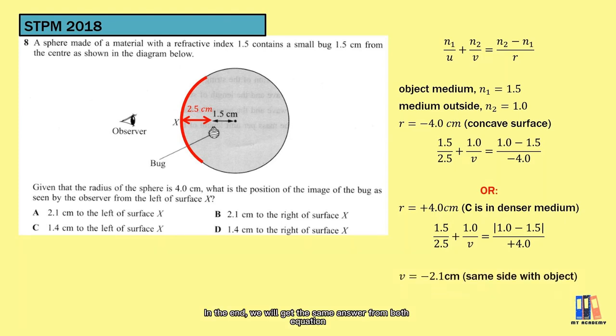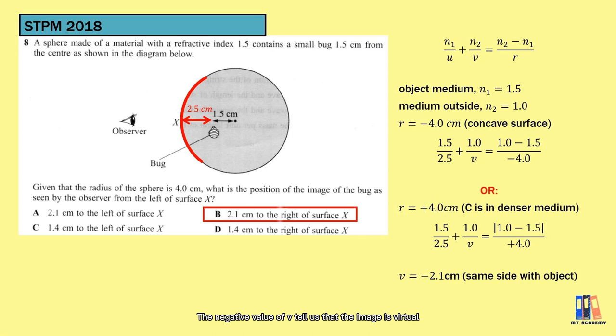In the end, we will get the same answer from both equations that the image distance is equal to negative 2.1 cm. The negative value of v tells us that the image is virtual. It is at the same side with the object. So if you came across a different solution in the book, I would suggest you to stay with either one of the sign conventions and try to do it again. For further discussion in my video here, I will choose the second type to solve any related question.